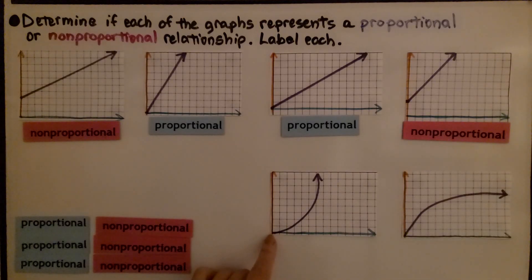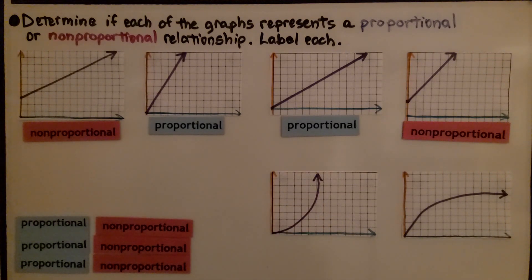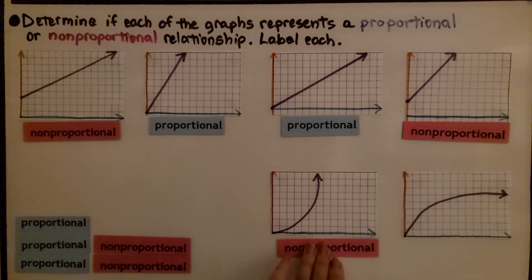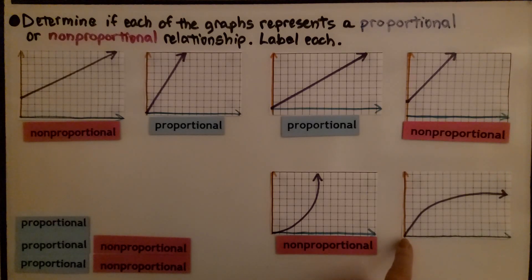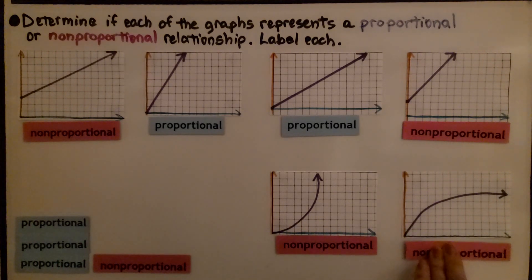This one is going through the origin and then curving up — that means it's non-linear. And remember the rule: if it's non-linear, it's non-proportional. And look at this last one — it's going through the origin, but it's not a straight line. Again, if it's non-linear, if it's not a straight line, it's non-proportional.